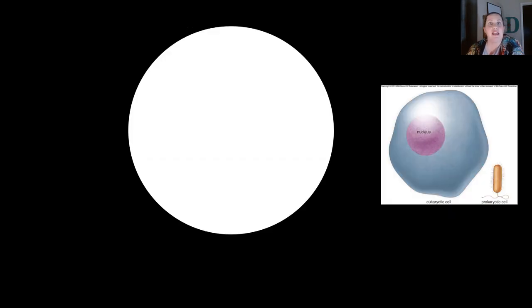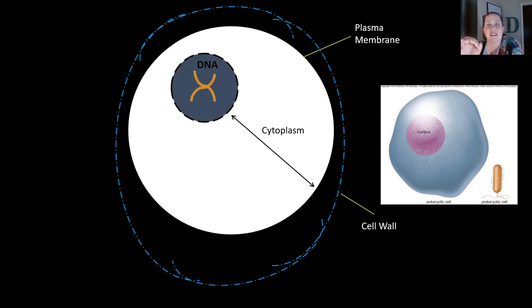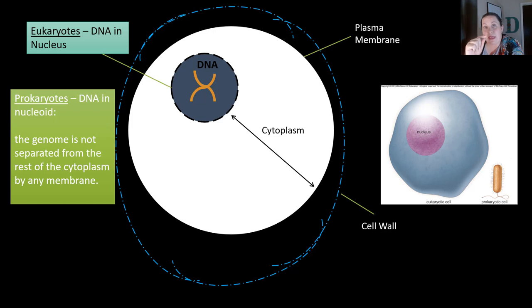Looking at a generic cell, we see the plasma membrane separating the inside from the outside, and the cell wall could go around the outside. We have the cytoplasm between the plasma membrane and where the DNA is found. In this case, the DNA is found inside a nucleus. In eukaryotic cells, the DNA is found in the nucleus, but in prokaryotic cells, their DNA is found in a general region called the nucleoid region, which does not have a special membrane around it like we see with the nucleus.